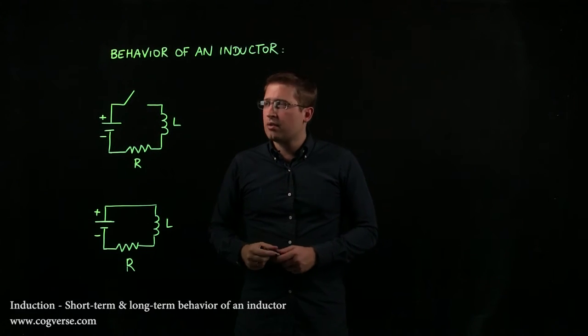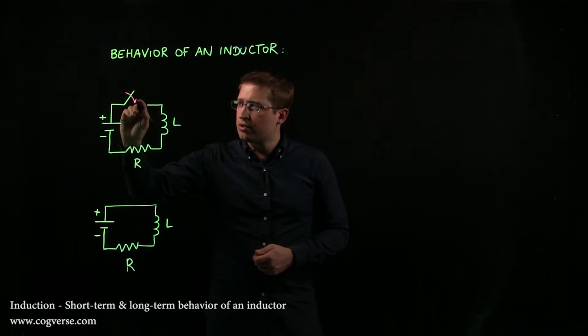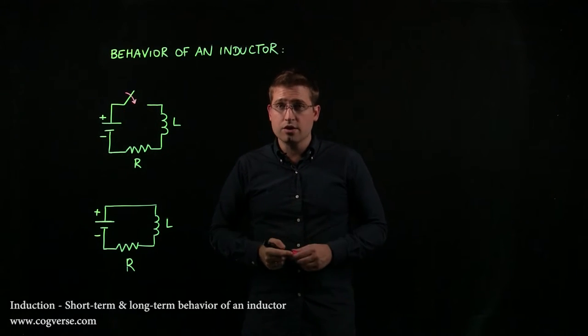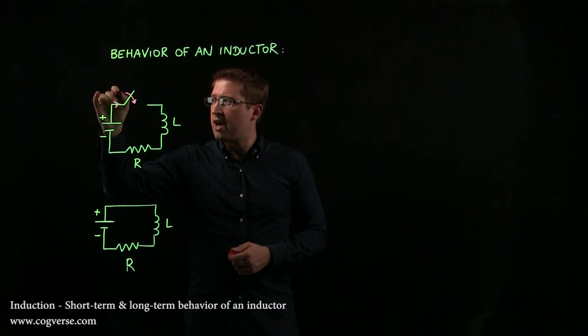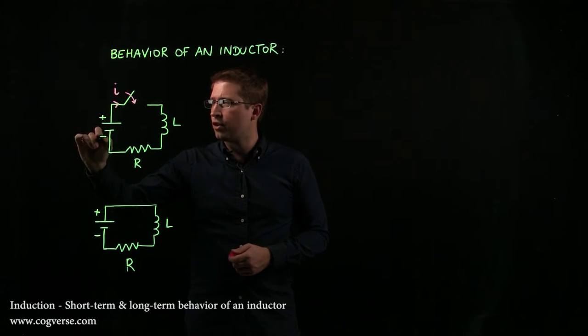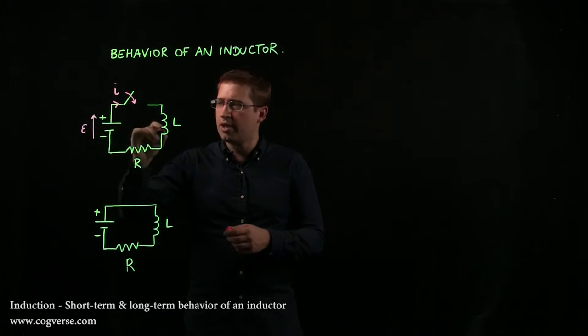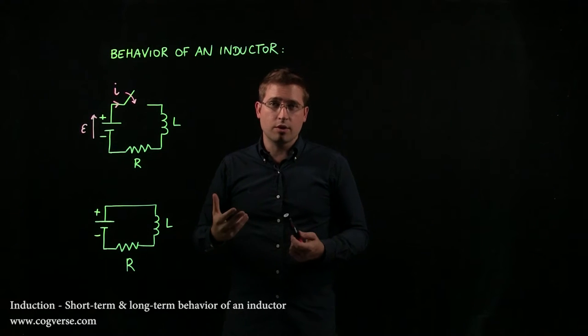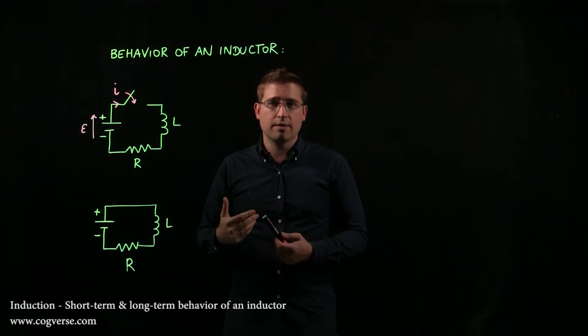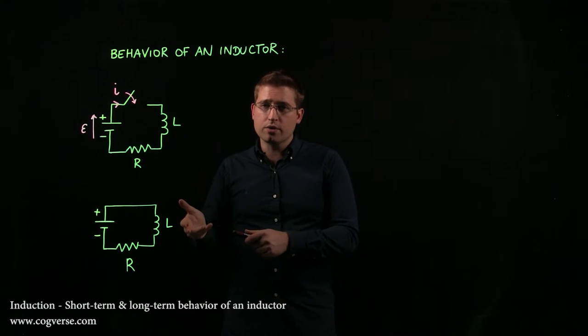So let's start out with our circuit. The switch is open, we're going to close the switch, and we said that initially the battery is going to try to send out a current I, but the inductor, since it notices that the current goes from zero to I, is going to say no way and oppose the change.